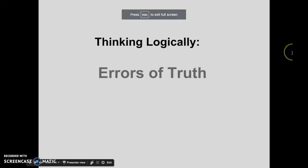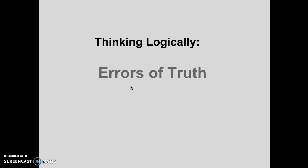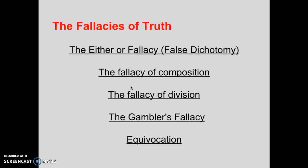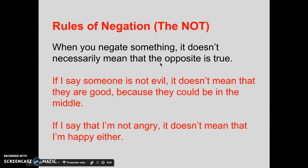This is lecture number seven of our critical thinking unit on the errors of truth, which is basically a misnomer because all of the fallacies we've gone over so far are errors of truth — it's just the name I've given to the leftover fallacies. Before we can talk about our first fallacy, the either-or fallacy, we need to talk about the rules of negation.